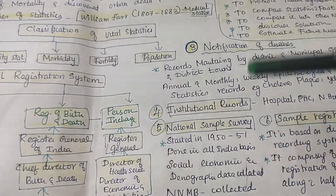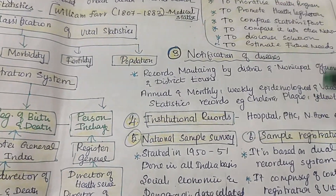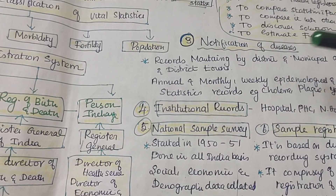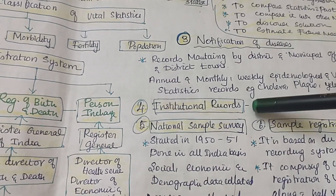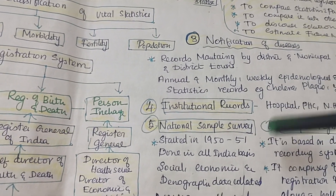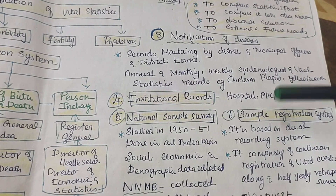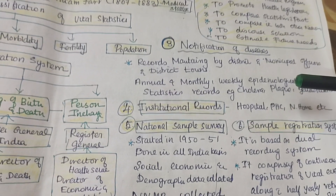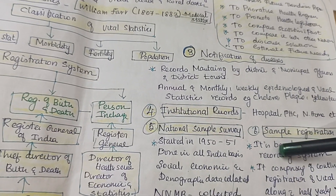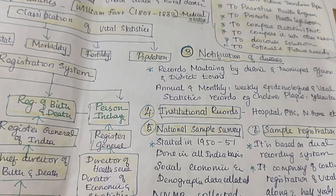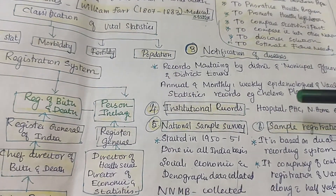Next, there is notification of disease — maybe sudden diseases are coming, records maintained by the municipality. This many people are dying — in the death certificate there is a column for the reason for death. This is evaluated annually, monthly, and weekly. The epidemiologist always does statistics and collections. They maintain records of sudden outbreaks of cholera, plague, or dengue. Every institution has records — you go to Apollo hospital or corporate hospitals, and that data must be transparent and submitted.